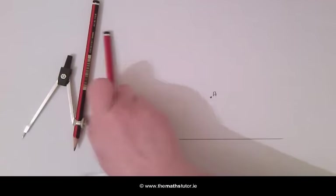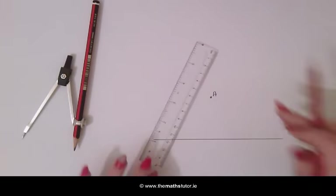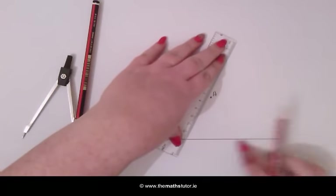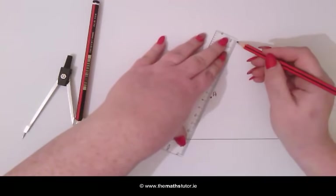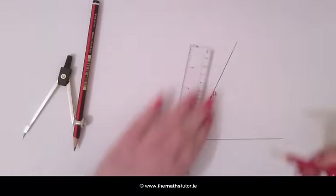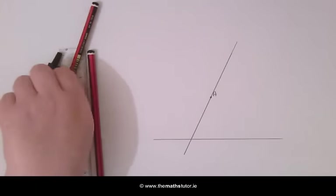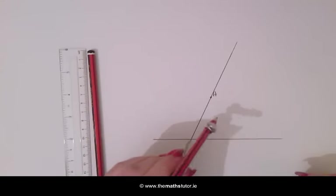The first thing we do is draw a line going through A at an angle to our line. We then take our compass and draw an arc across both of these lines.